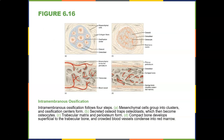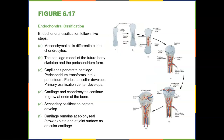Intramembranous ossification follows four steps: mesenchymal cells group into clusters and ossification centers form; secreted osteoid traps osteoblasts which become osteocytes; the trabecular matrix and periosteum form; compact bone develops superficial to the trabecular bone; and crowded blood vessels condense into red marrow.